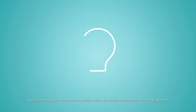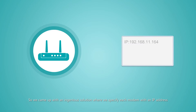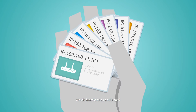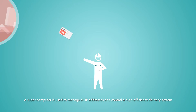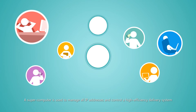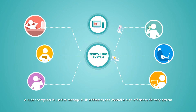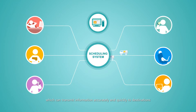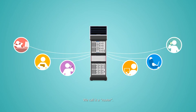So we came up with an ingenious solution where we specify each model with an IP address, which functions as an ID card. A supercomputer is used to manage all IP addresses and control a high-efficiency delivery system, which can transmit information accurately and quickly to destinations. We call it a router.